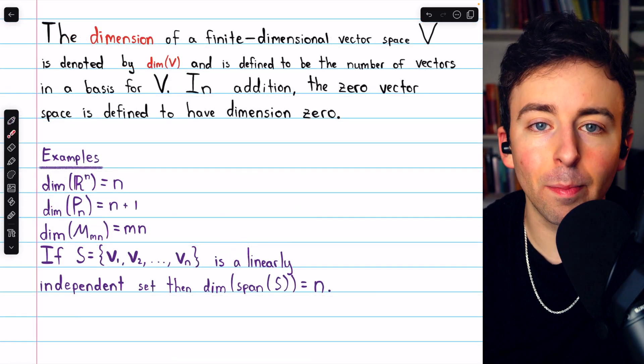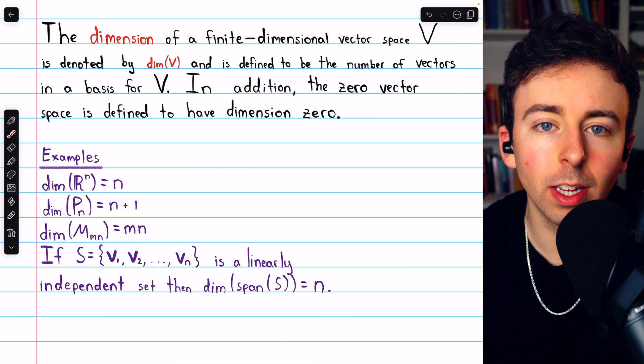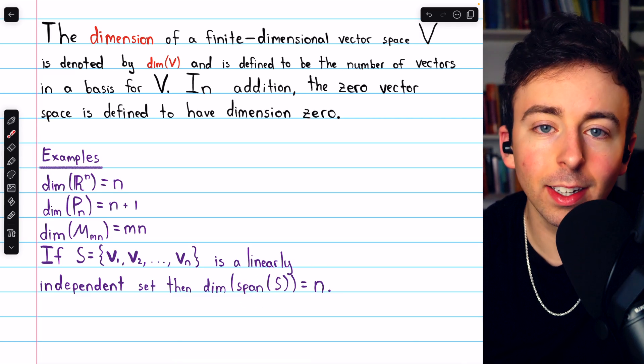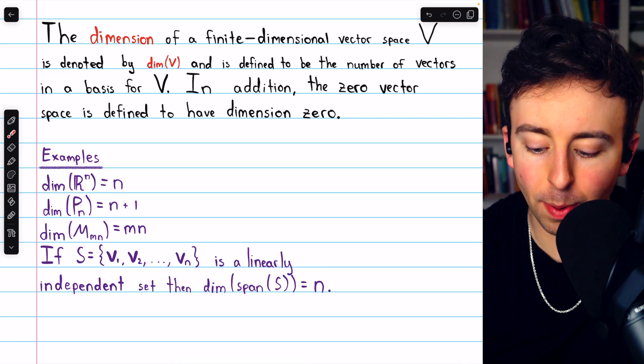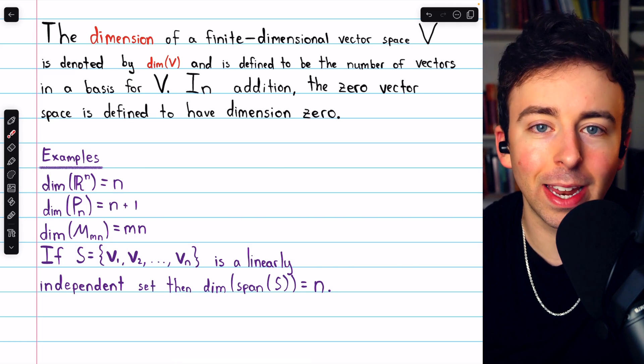One more general example: if we have a set of n linearly independent vectors, then certainly it's a basis for its span. And so the dimension of its span is n, the number of vectors in that linearly independent set.